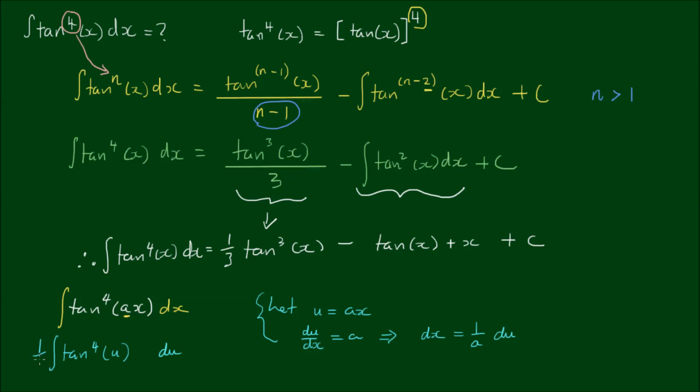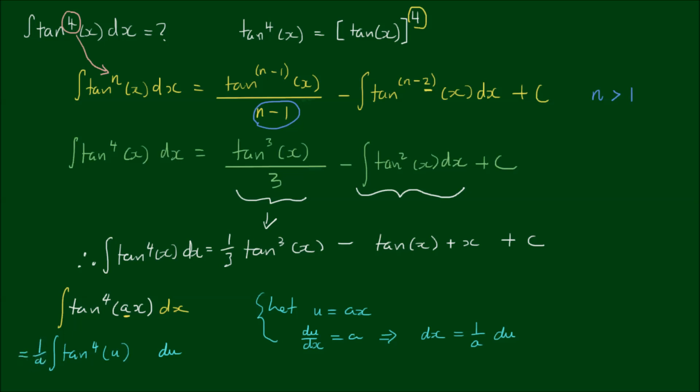The 1 on A can be written out the front. And if we leave the 1 on A at the front, the rest of the integral carries the same form as above. So it is tan cubed of u on 3 minus tan of u plus u plus the integration constant at the end.